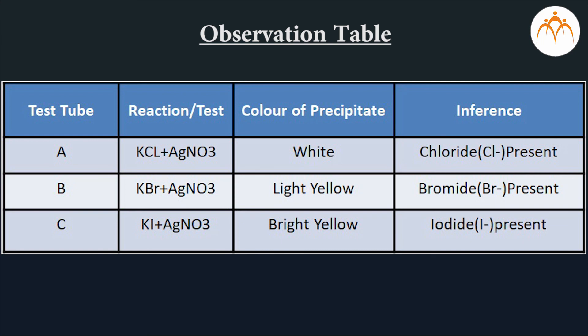All these elements are from one group. Why? Because when they react with silver nitrate they form precipitate. Though they are of different color,